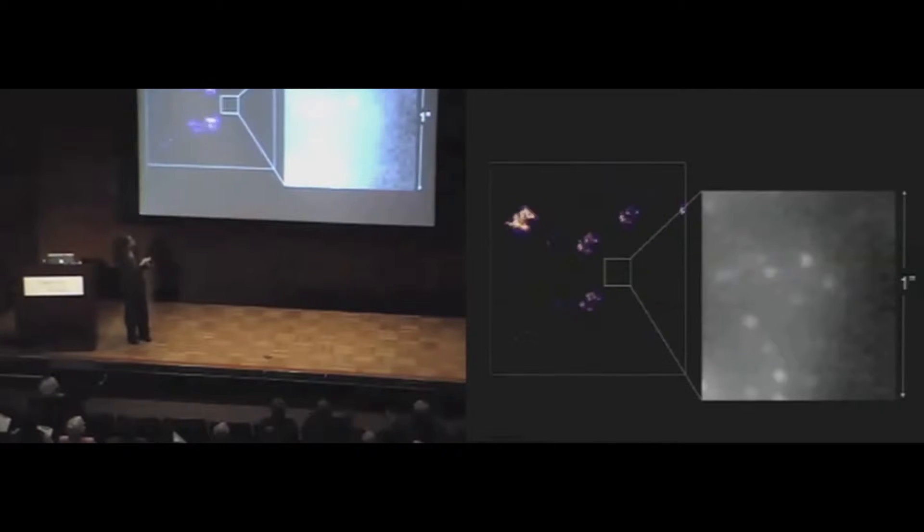So this is what's called speckle imaging. It's what I like to call poor man's adaptive optics because it doesn't cost a lot of money in hardware. It's just blood and sweat that it costs. And for the first decade of this experiment, that's what we did.